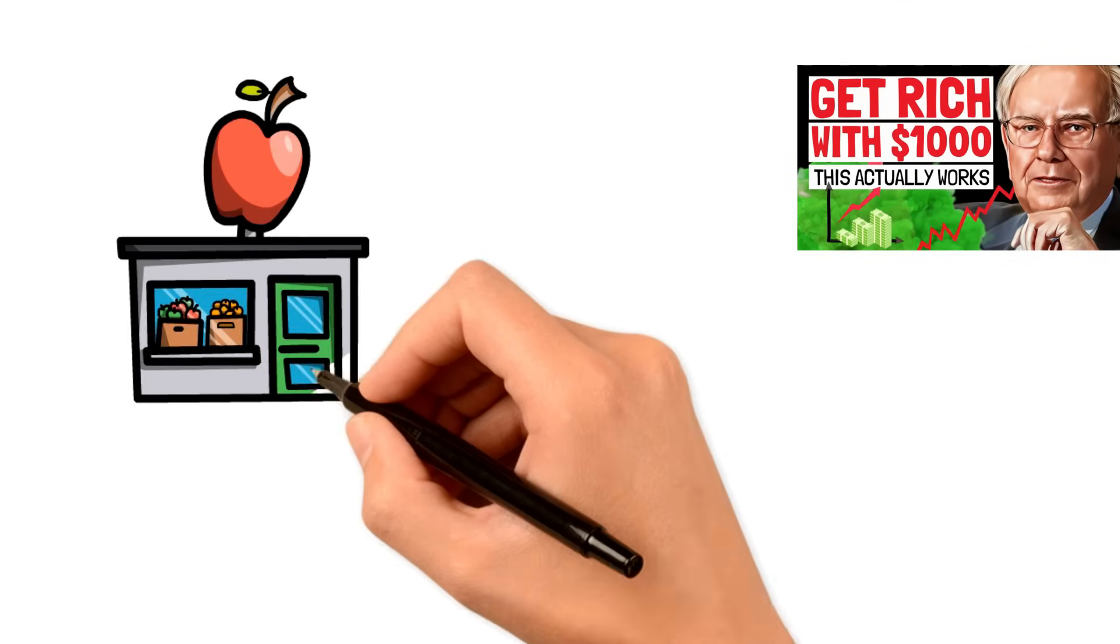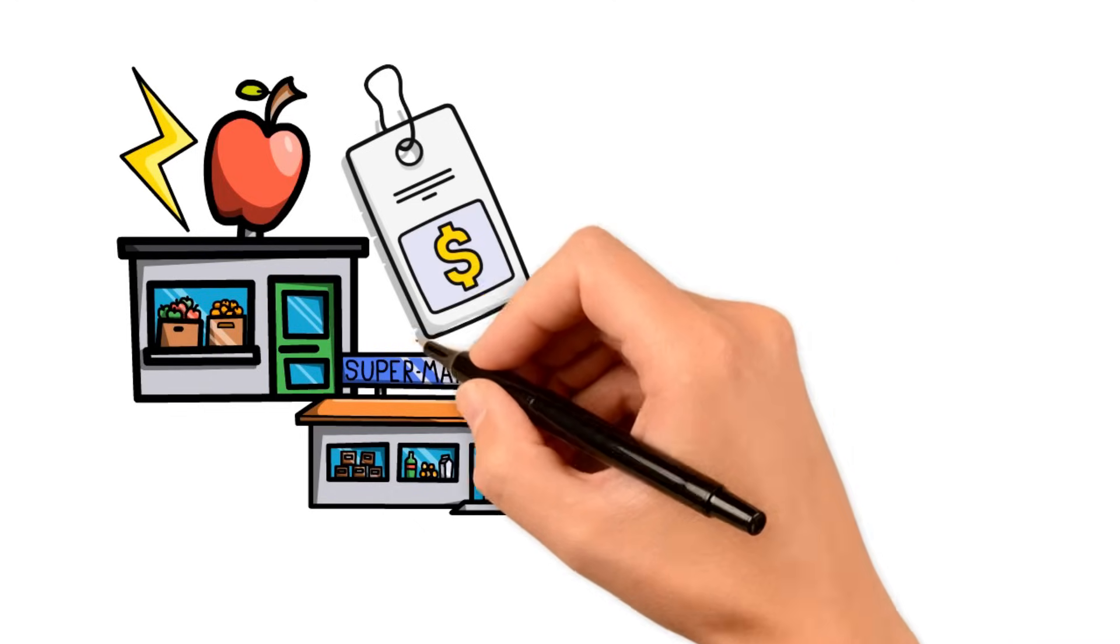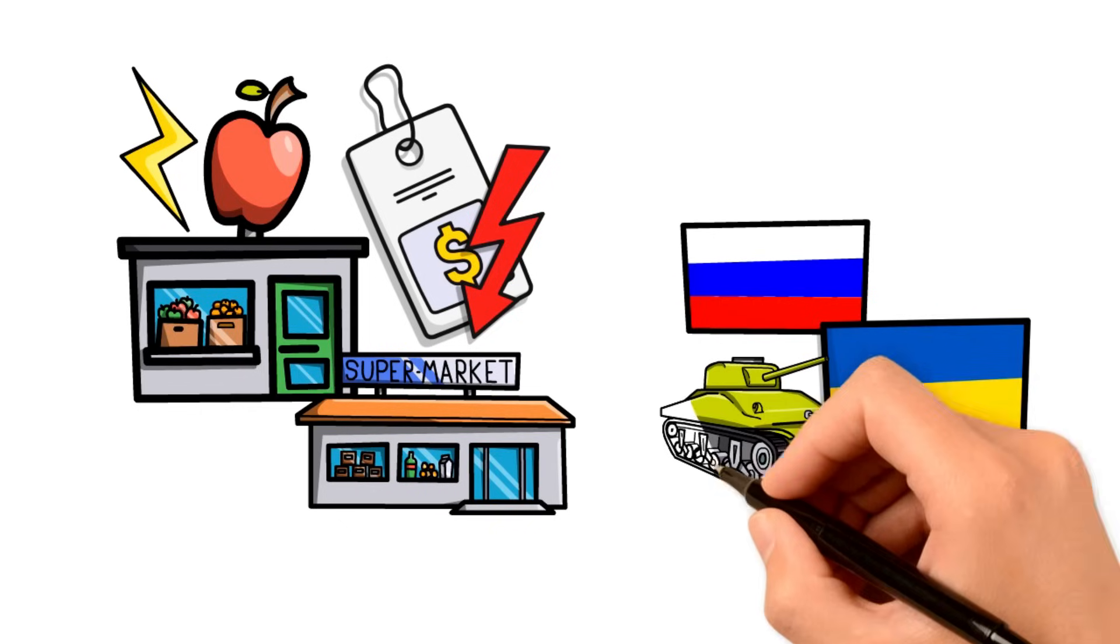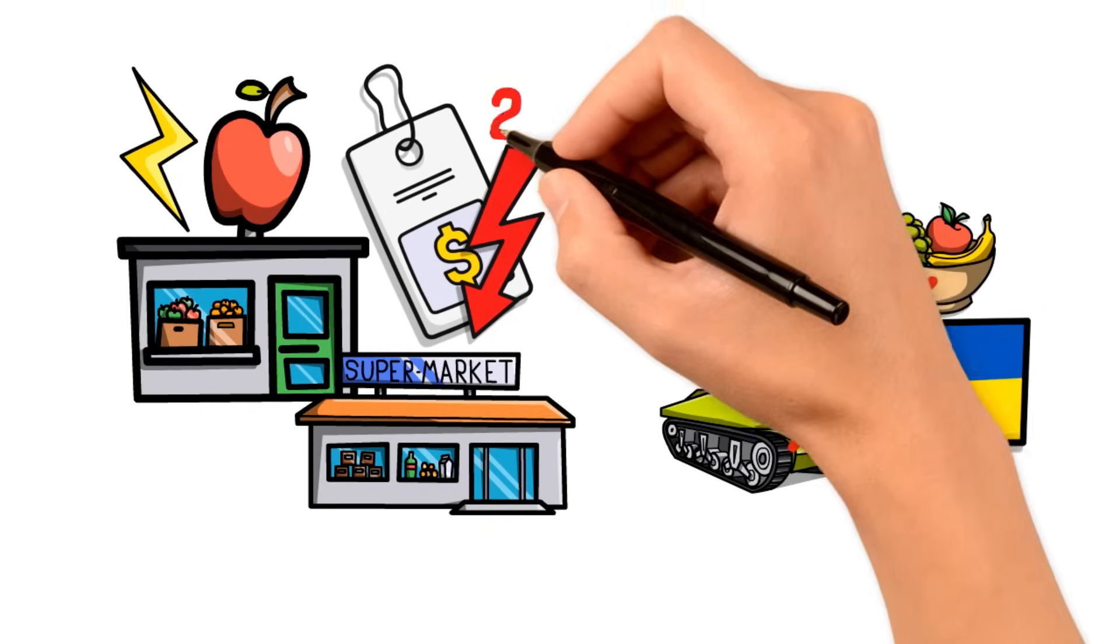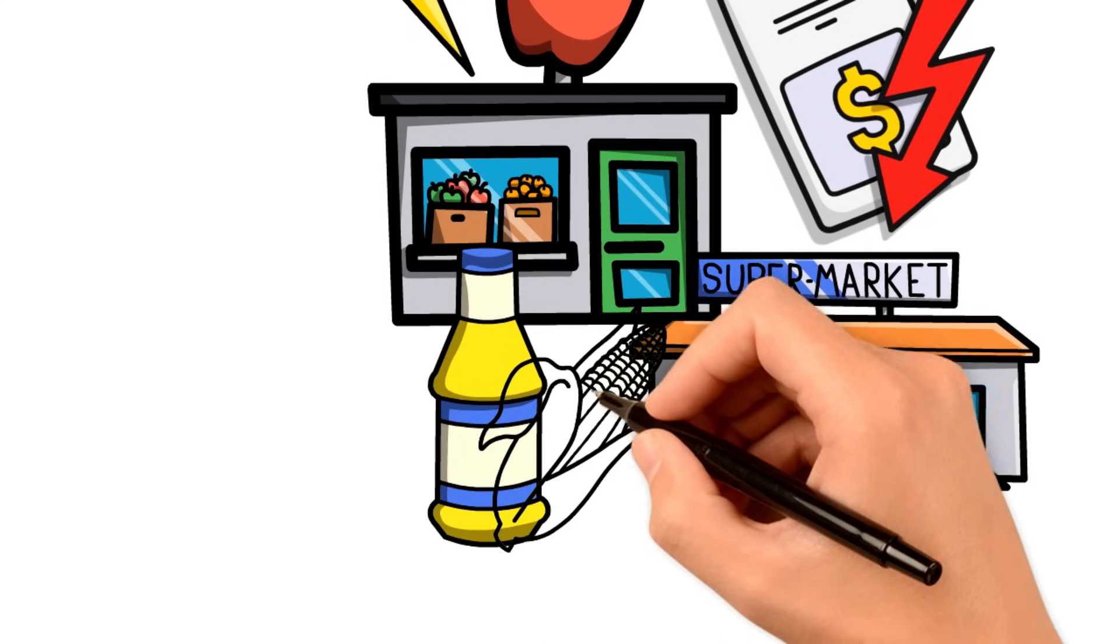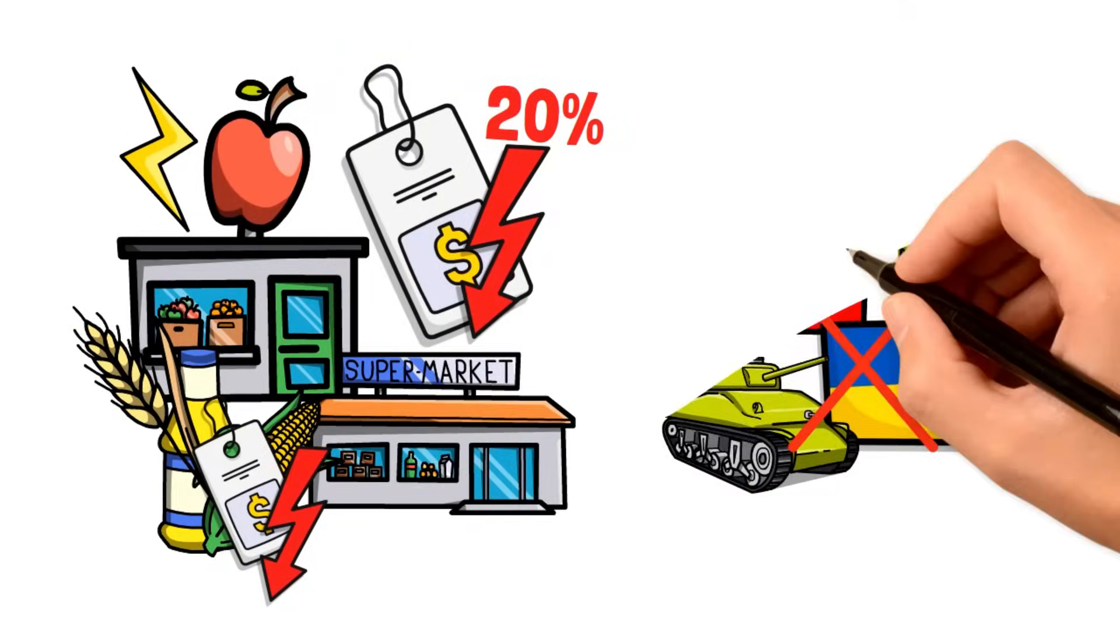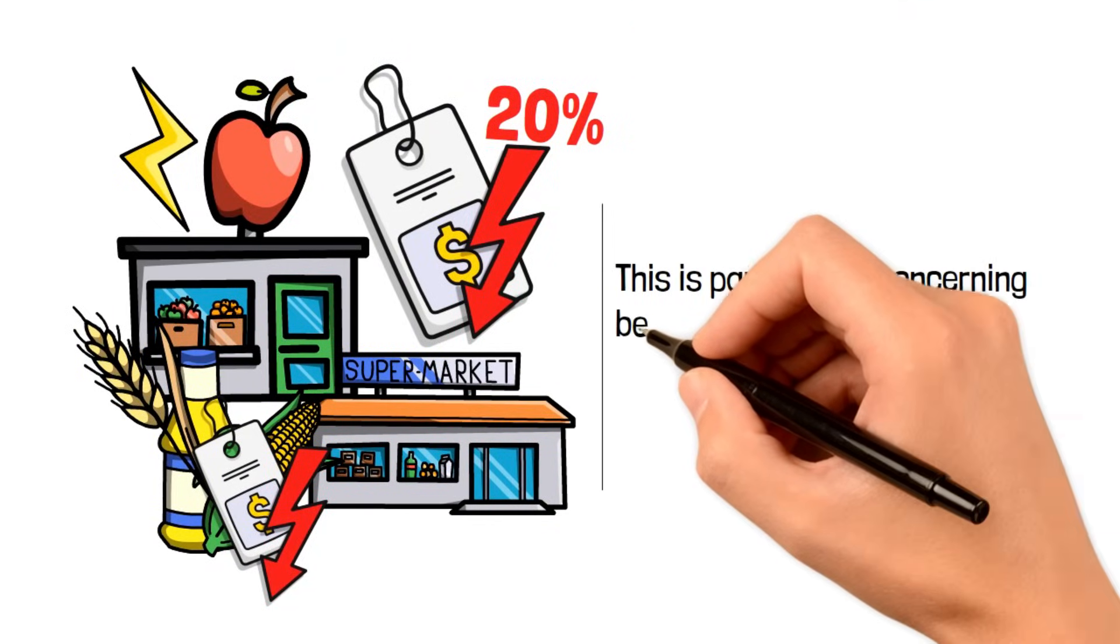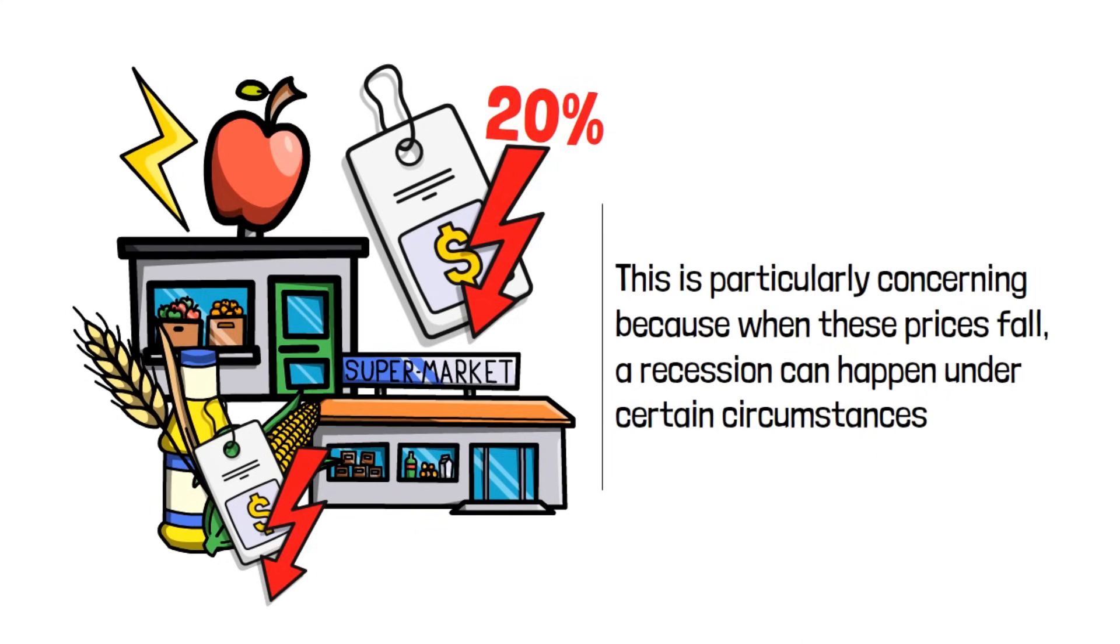Moving on, it's almost common knowledge that the prices of commodities, including food and energy, have been dropping. It's no longer news that after Russia invaded Ukraine, global food commodity prices reached a record high before declining over 20% this year. Even vegetable oil, maize, wheat, sunflower oil, and all kinds of stuff drastically decreased at some point this year, up to 20% or more. This is particularly concerning because when these prices fall, a recession can happen under certain circumstances. Let's break it down.